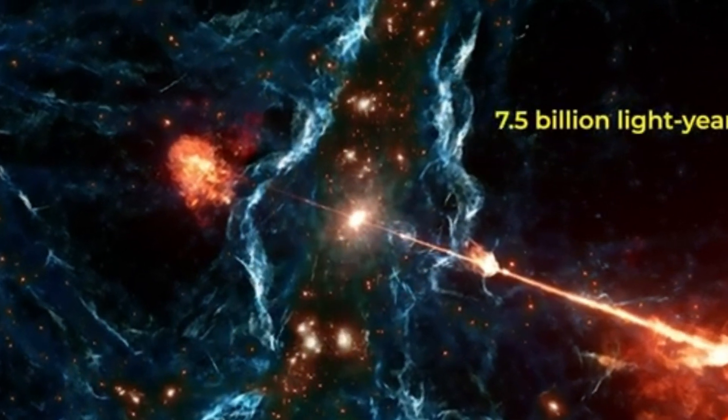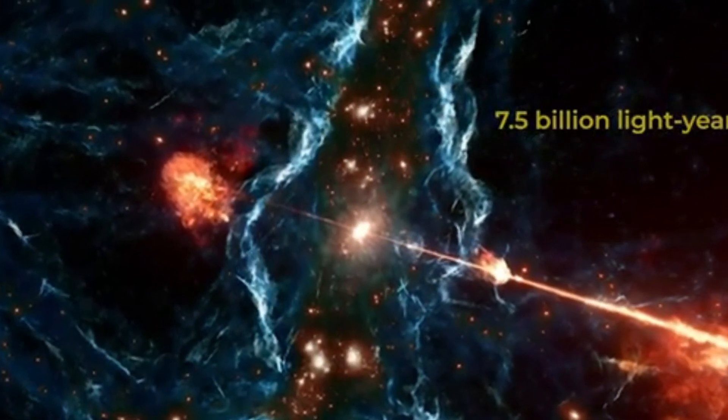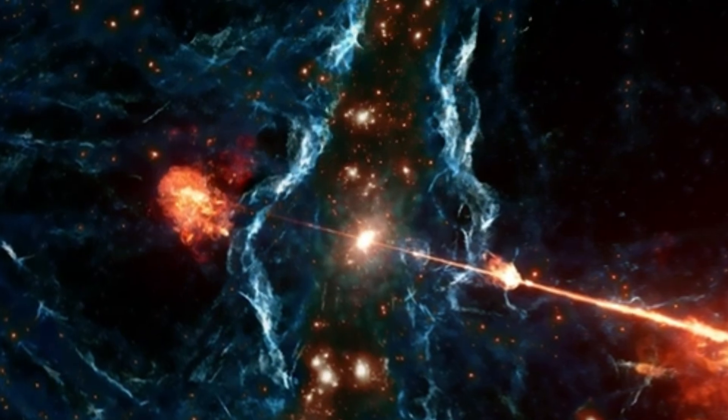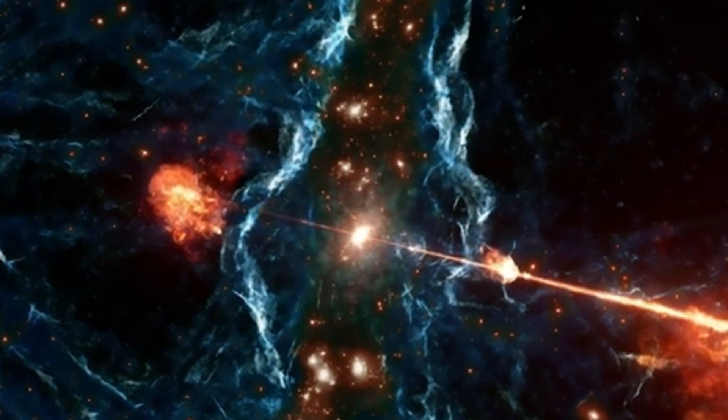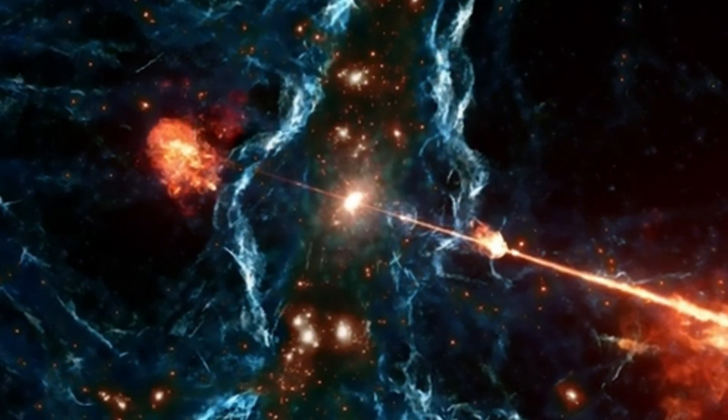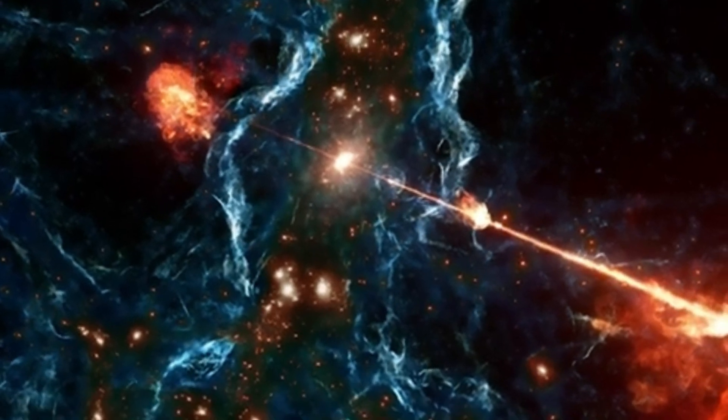Astronomers have found a black hole jet as long as 140 Milky Way galaxies lined up back to back. These jets, known as Porphyrion, span an incredible 23 million light-years in length.